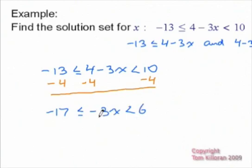Now, the next step would be, I want to divide by this negative 3. But if I divide the middle by it, I also have to divide the left and the right. All right, so let's go through and divide everything by negative 3. Now, when you're dealing with inequalities, you have to be very careful when you divide or multiply by a negative. What's going to happen is the inequalities are going to flip.